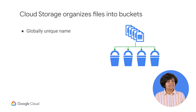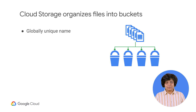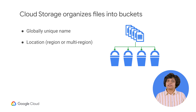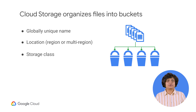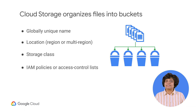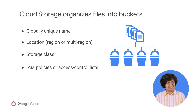Cloud storage files are organized into buckets. When you create a bucket, you give it a globally unique name, you specify a geographic location where the bucket and its contents are stored, and you choose one of the default storage classes introduced earlier. There are several ways to control users' access to your objects and buckets. For most purposes, Cloud IAM is sufficient.